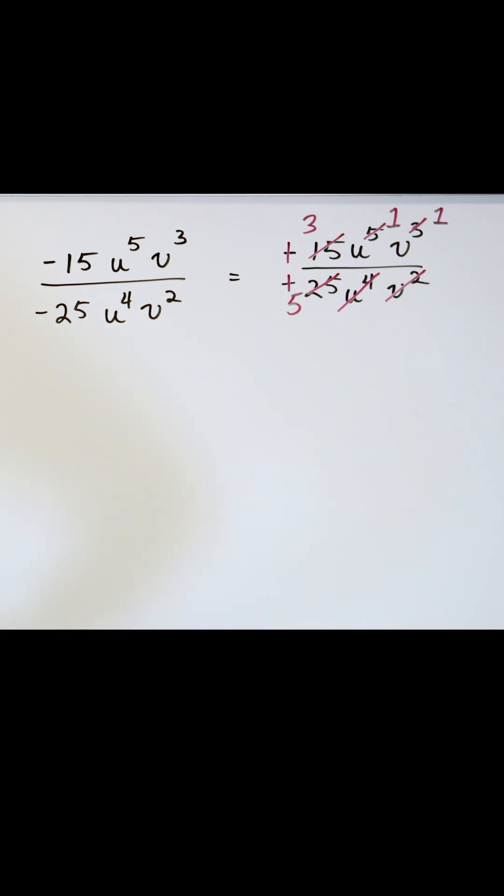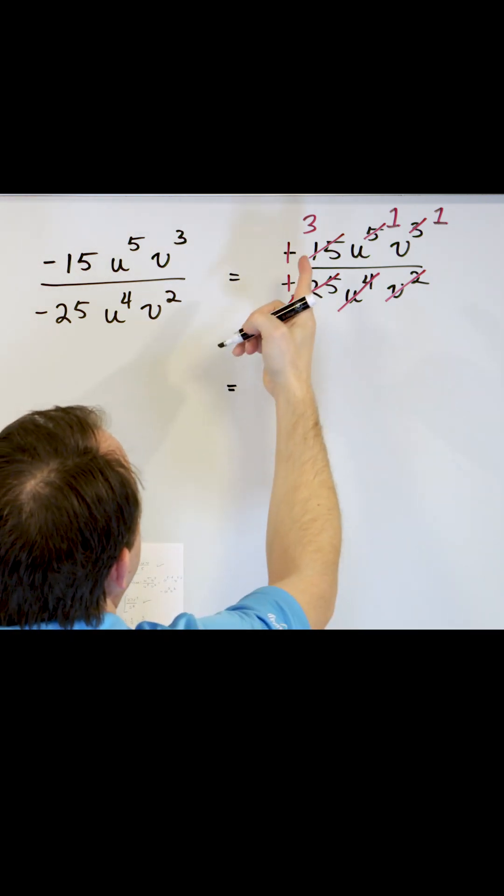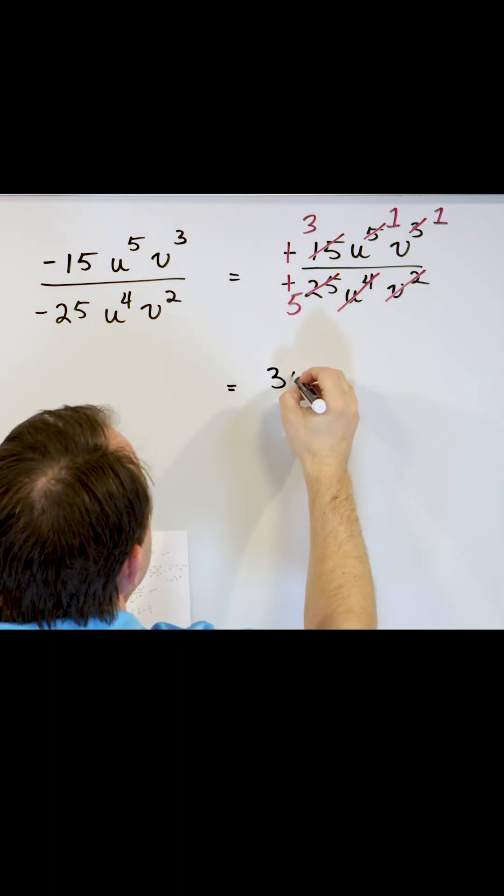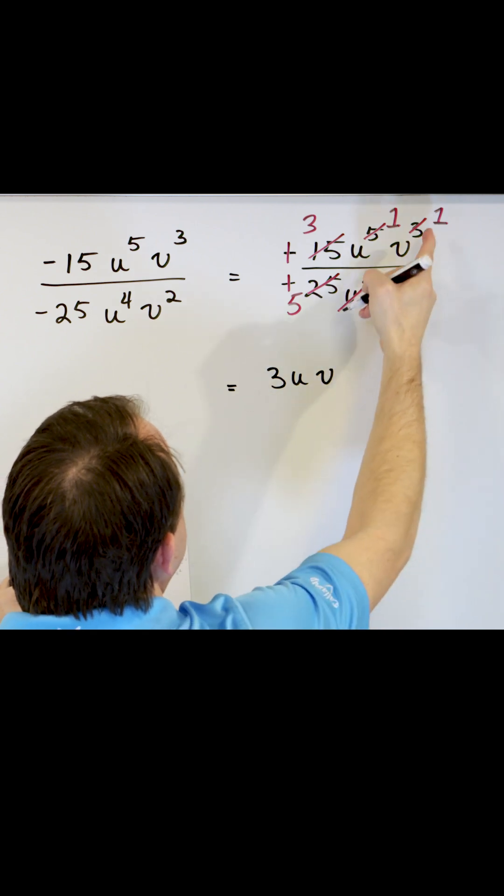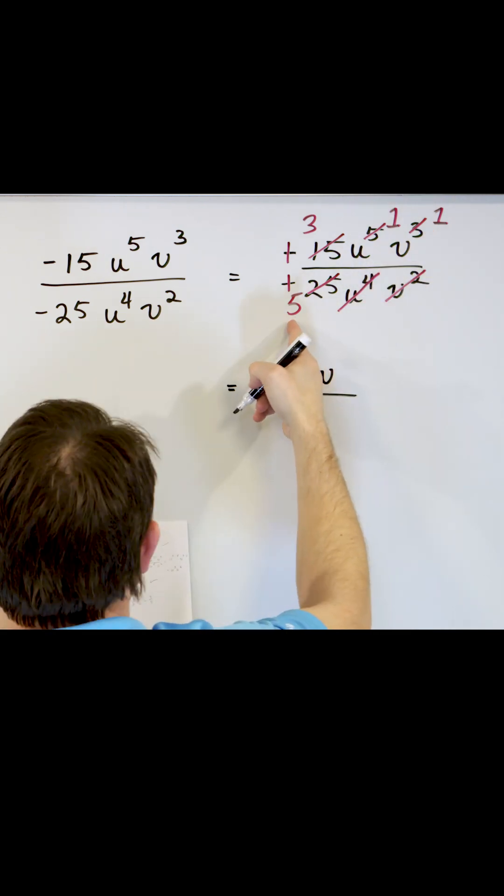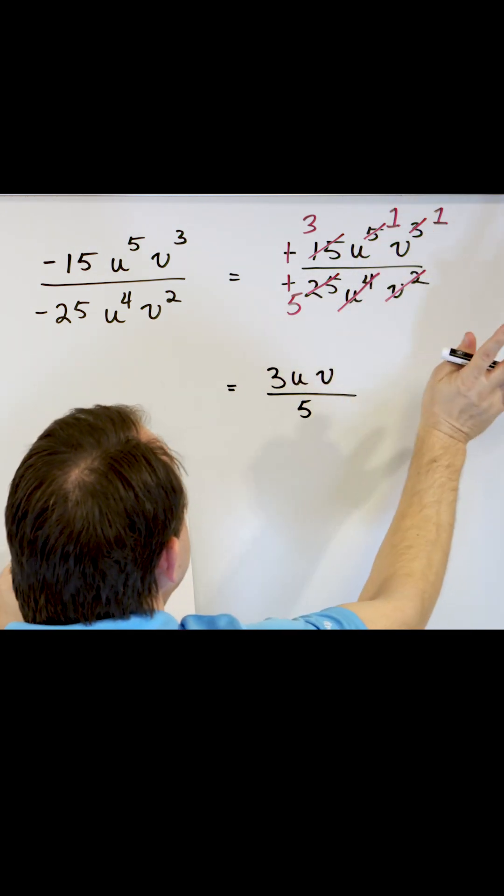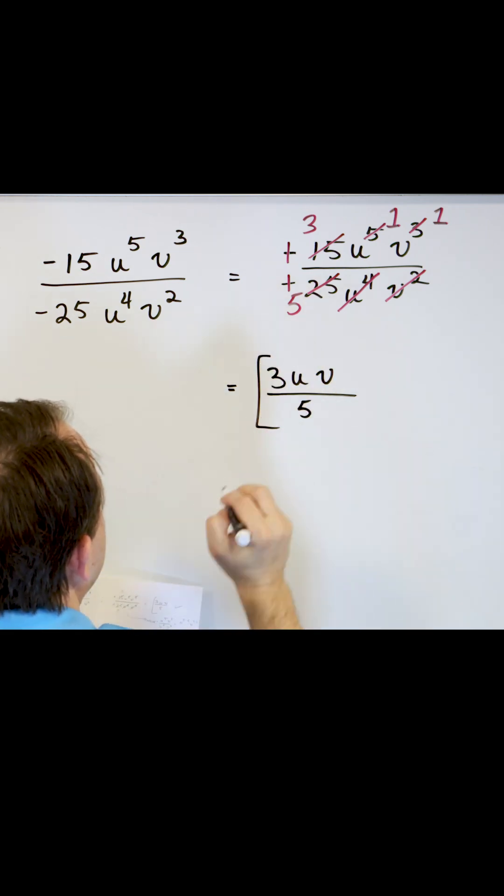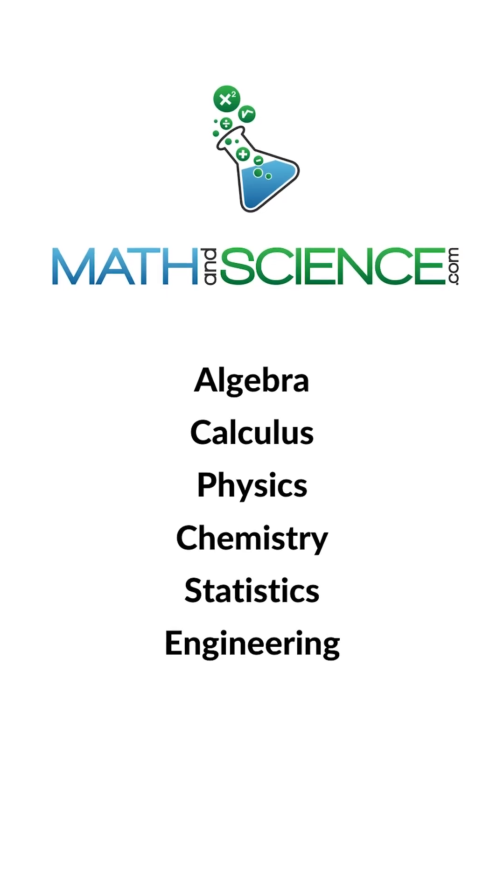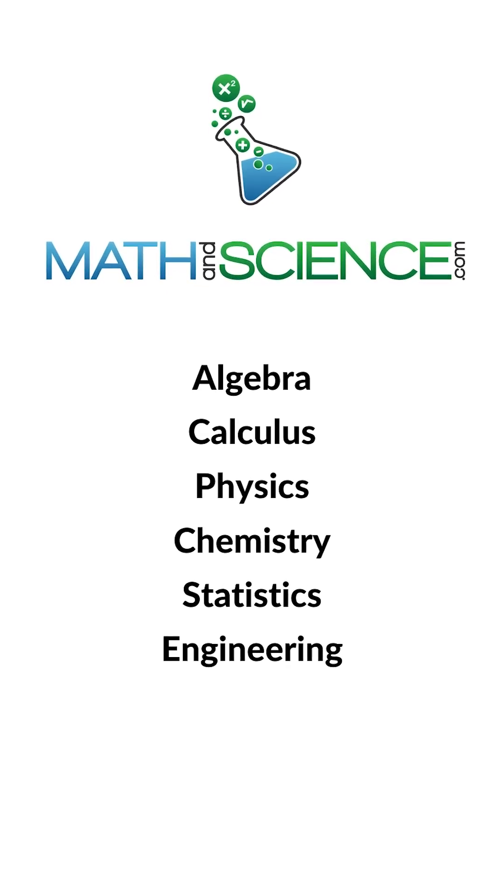So then what we're going to have for our final answer is positive 3U to the first power, V to the first power. On the bottom, we will have a 5. There's nothing else left except for the 5 on the bottom, so we have that as our final answer. Learn anything at mathandscience.com.